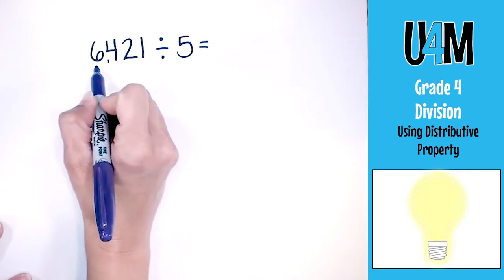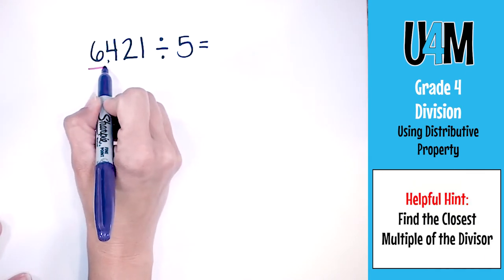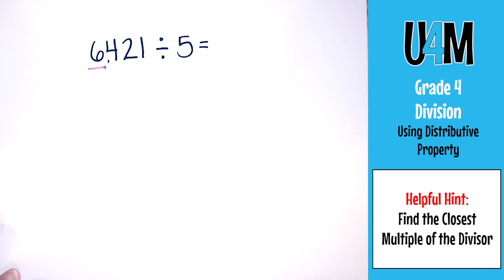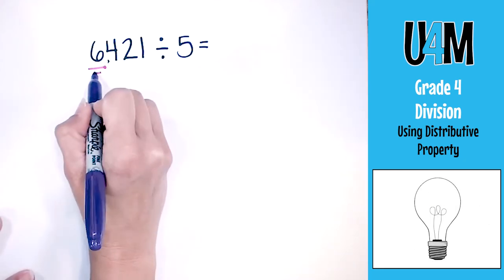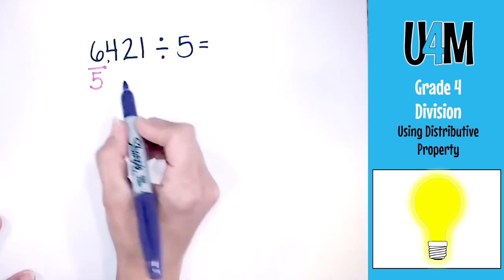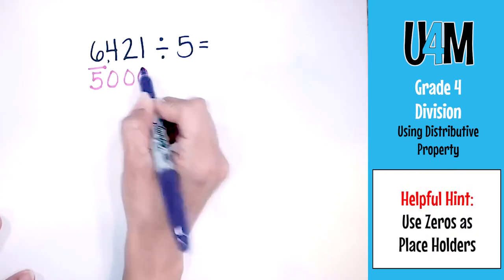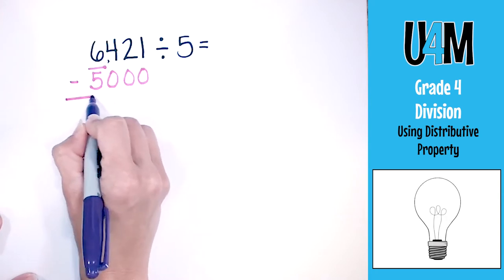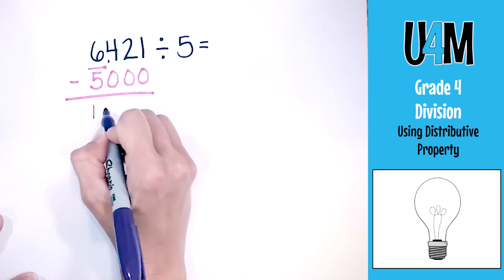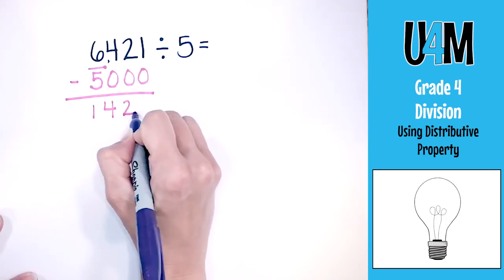But first, I'm going to look at the numbers just like before. What's the closest multiple of 5 to the number 6? Well, in this case, it would be 5. So I put 5 here, and because this is the thousands place, I'm going to put zeros to fill in the place values. So once I subtract 5000, I'm going to get 1421.